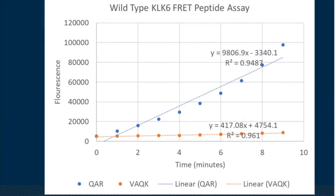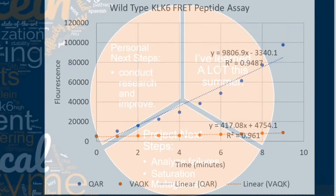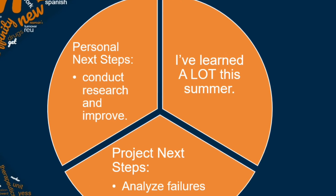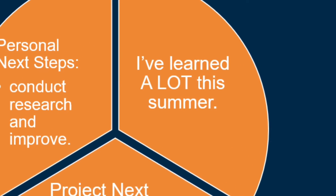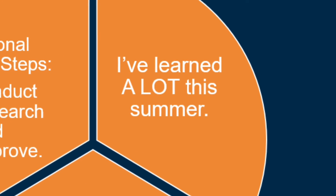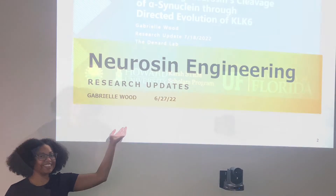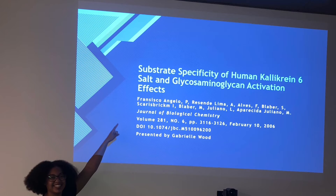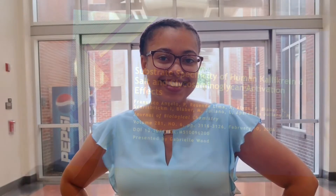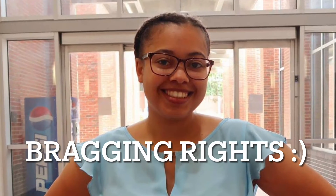Despite our issues with DNA assembly, we were able to do some preliminary kinetic assays on the wild-type Calocrin-6. Working in the Denard lab this summer has been an invaluable experience to learn about microbiology techniques and experimental design in synthetic biology. I also got a lot of practice giving presentations in the form of research updates and a journal club presentation. By reading journal articles, I actually reminded Dr. Denard of an important discovery related to the kinetic properties of wild-type Calocrin-6 and one of its substrates.